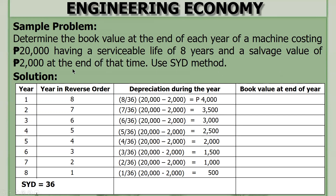The book value at the end of each year is computed as follows. For year one, book value equals first cost minus depreciation during year one: 20,000 minus 4,000 equals 16,000. This becomes the starting value for year two. Subtracting the second year depreciation of 3,500, the book value at the end of year two is 12,500.